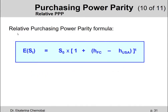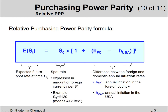In general, the relative purchasing power parity formula says: to calculate the expected spot exchange rate at any point in time T in the future — where T could be 1, 2, or 3 years — it equals the spot exchange rate S0 (the amount of foreign currency per one US dollar) multiplied by (1 + (h_fc − h_USA))^T. The notation h_fc stands for the annual inflation rate in the foreign country, and h_USA stands for the annual inflation rate in the United States.